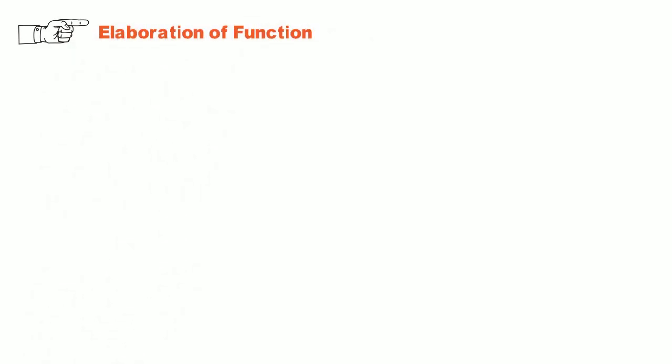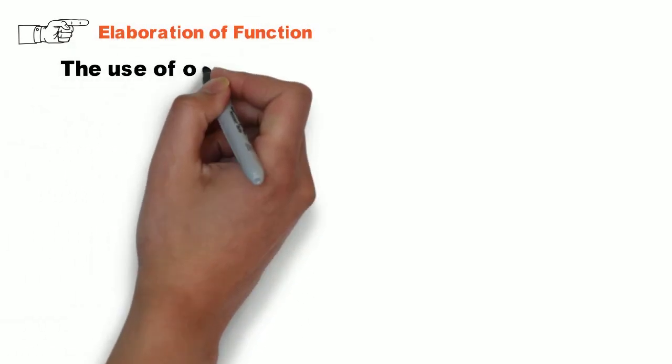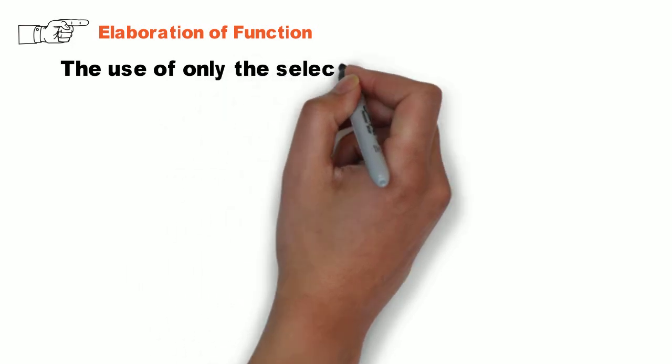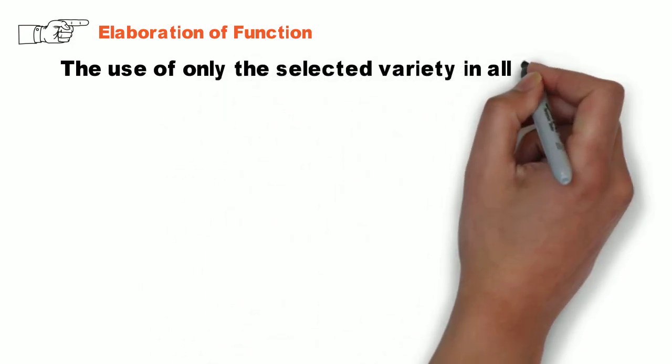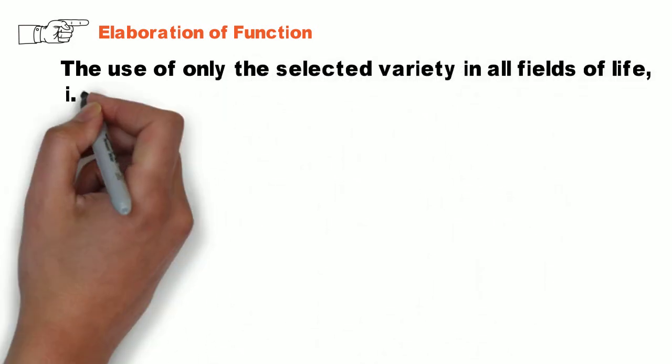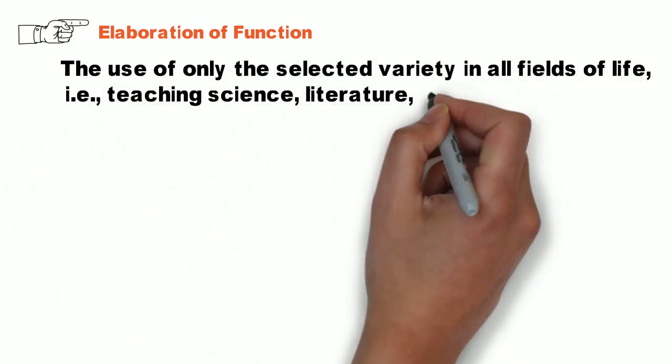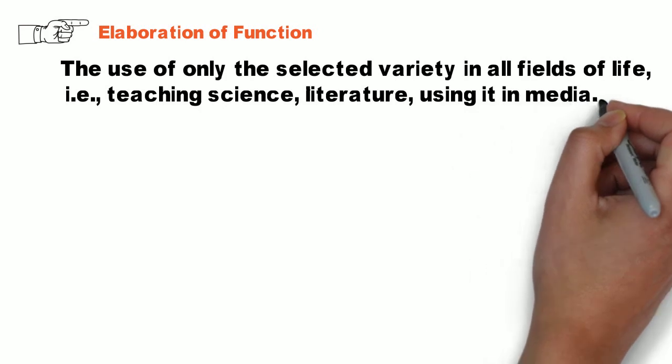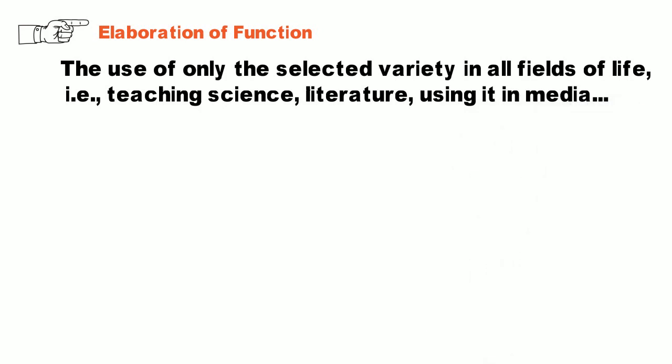The third step is elaboration of function, which is the use of the only selected variety in all fields of life — for example, teaching, science, literature, and also using it in media.